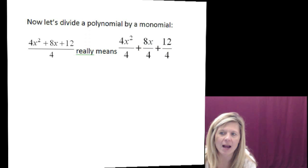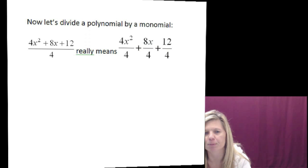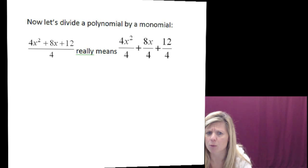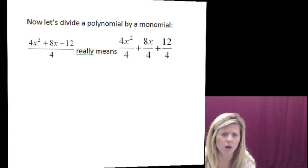I have a polynomial 4x squared plus 8x plus 12, and it says to divide it by 4. If you look very closely, that division bar goes all the way across, which means you're not dividing just the first term by 4, you're dividing all of them by 4.